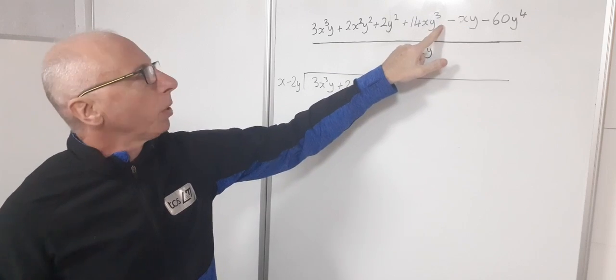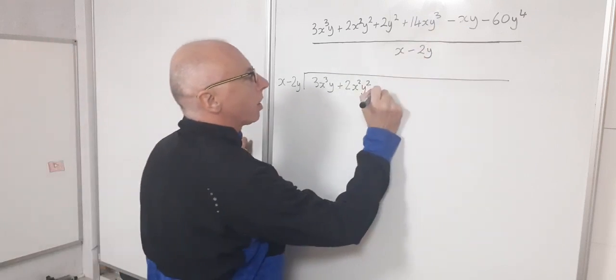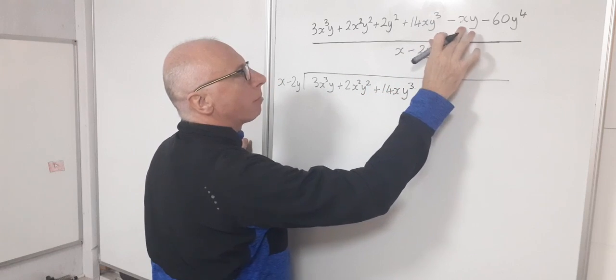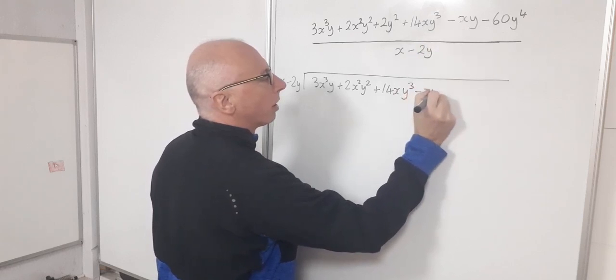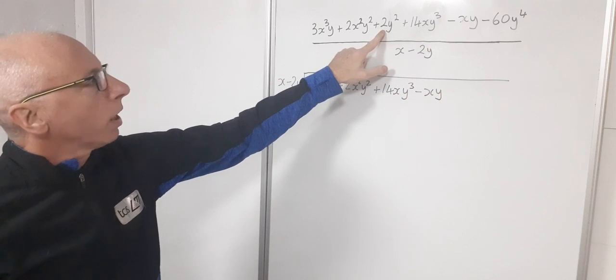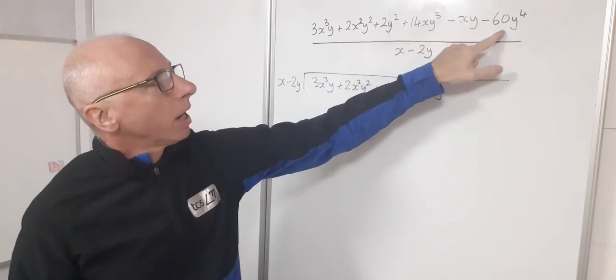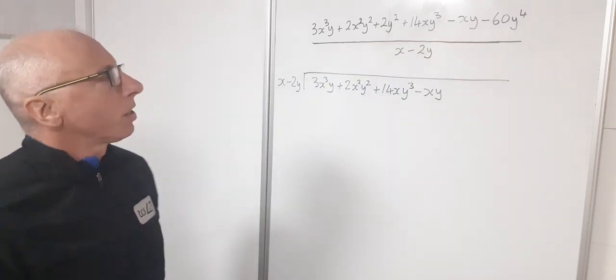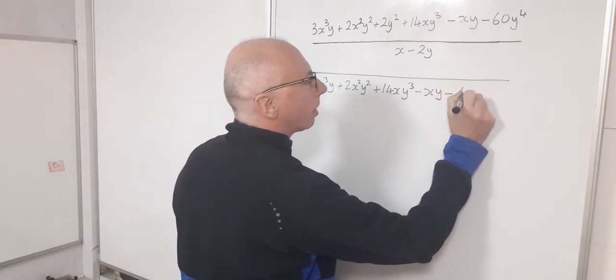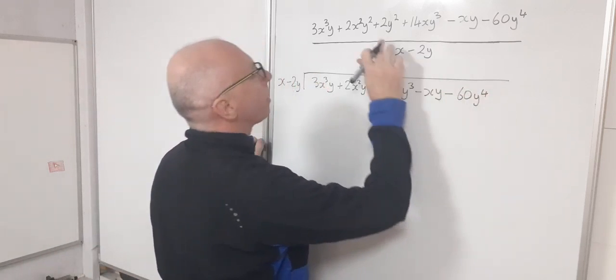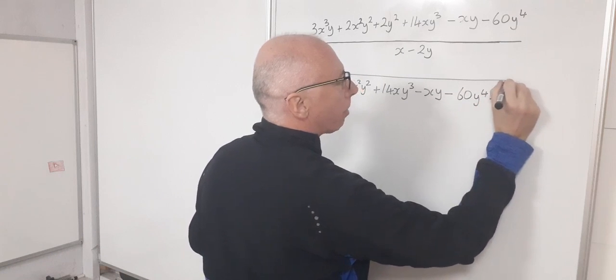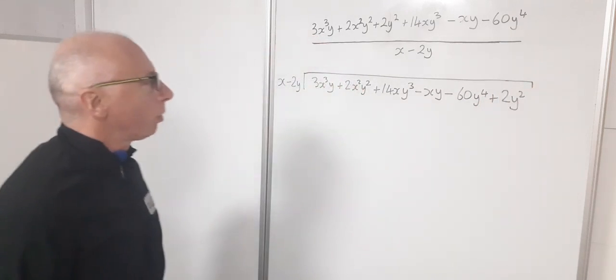But as this y is cubed I'm going to put that first. So plus 14xy³ and then minus xy. And then the two terms that are left is this 2y² and minus 60y to the 4. So that's my setup to work this out.